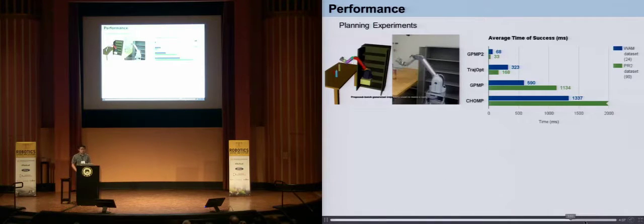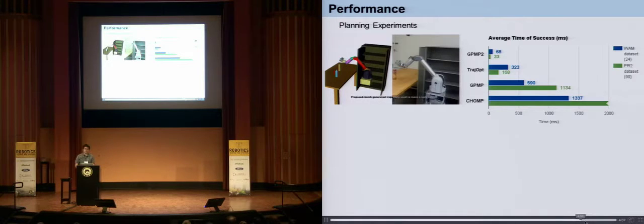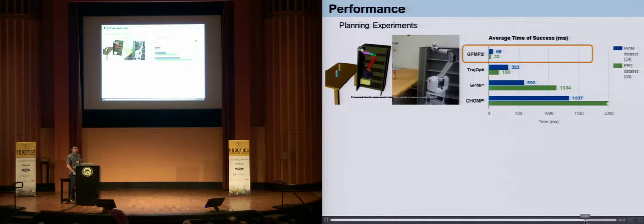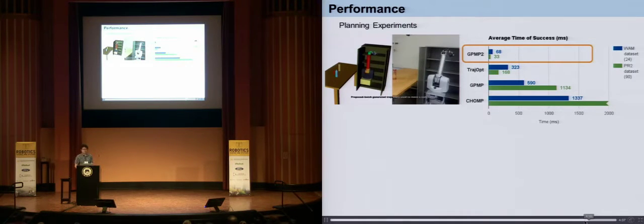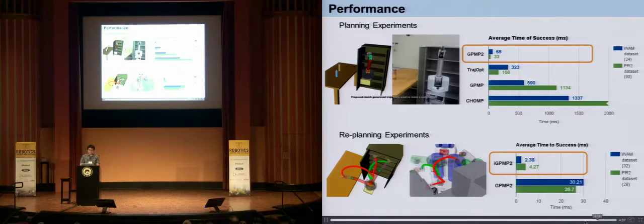We benchmark our algorithm against several state-of-the-art trajectory optimization approaches on two datasets: a 7-degree-of-freedom WAM arm and a 7-degree-of-freedom PR2 arm. Our planner, GPMP2, is several times faster compared to existing approaches without losing success rate. For our re-planner, iGPMP2, we achieve an extra order of magnitude speedup.